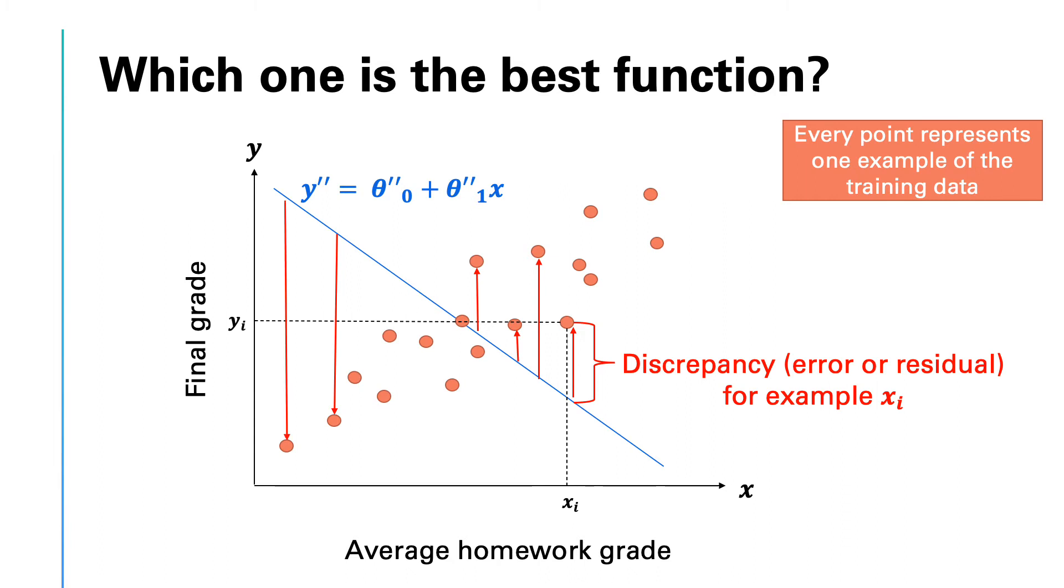Looking at these errors, we can tell that this function is not a good fit for the training data. The observed residuals are too large, and in fact, the slope of the function is negative which is not consistent with the general trend of our training data.